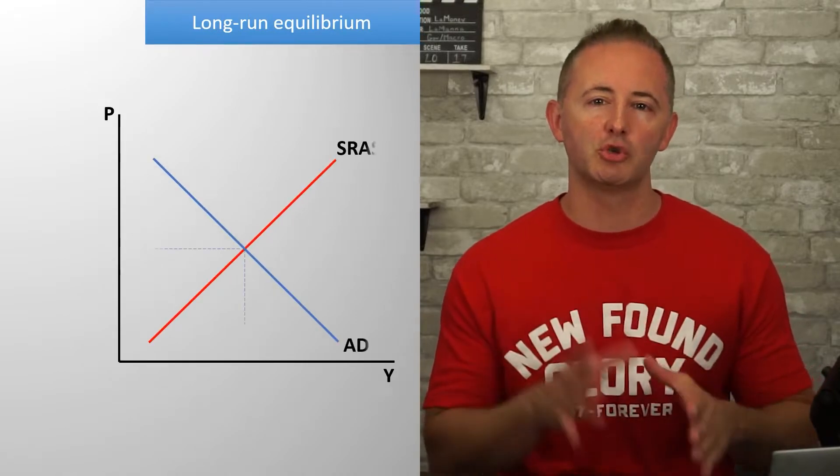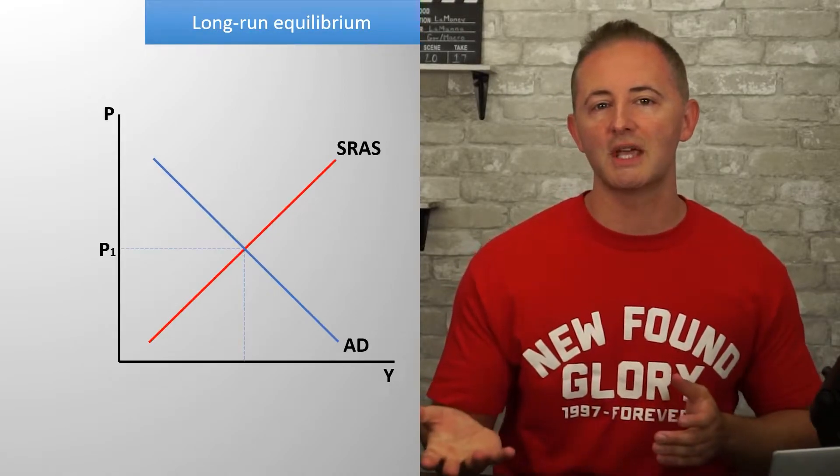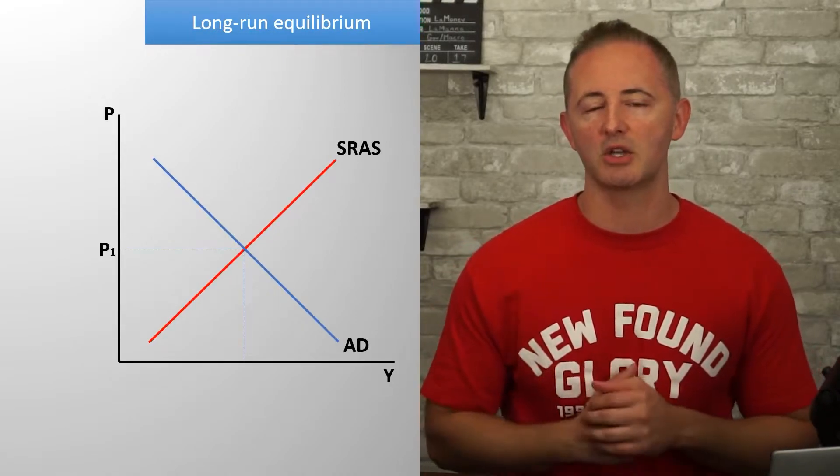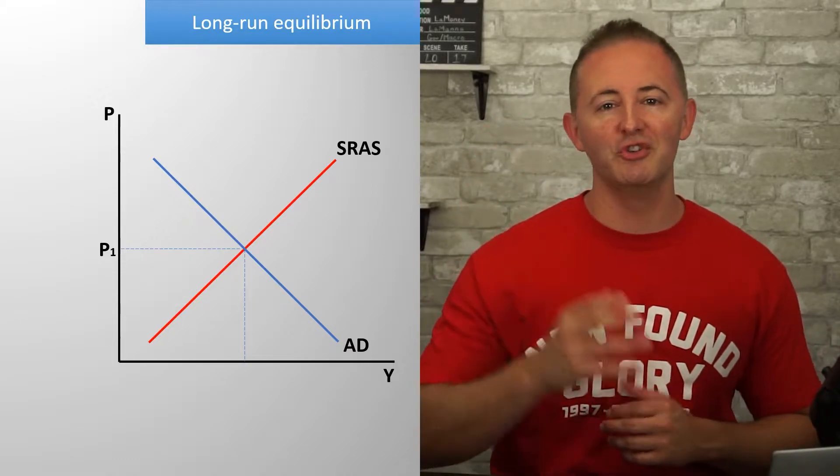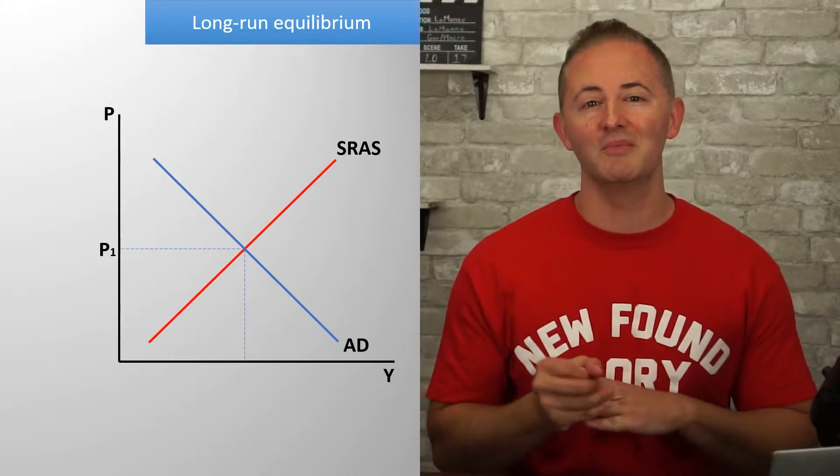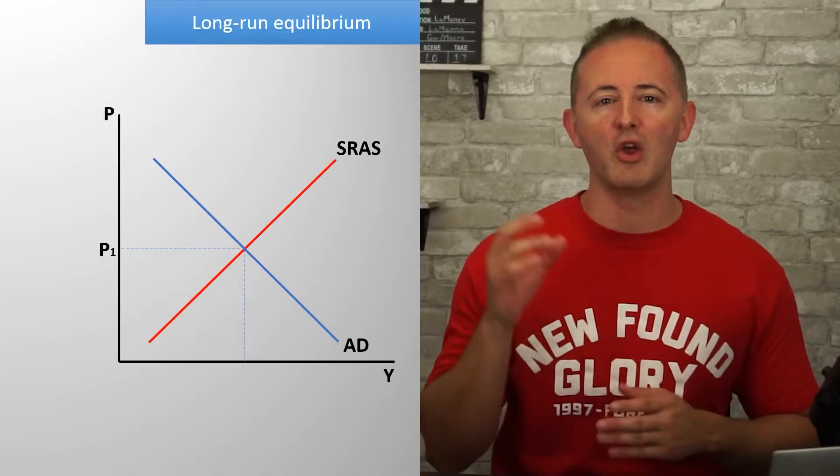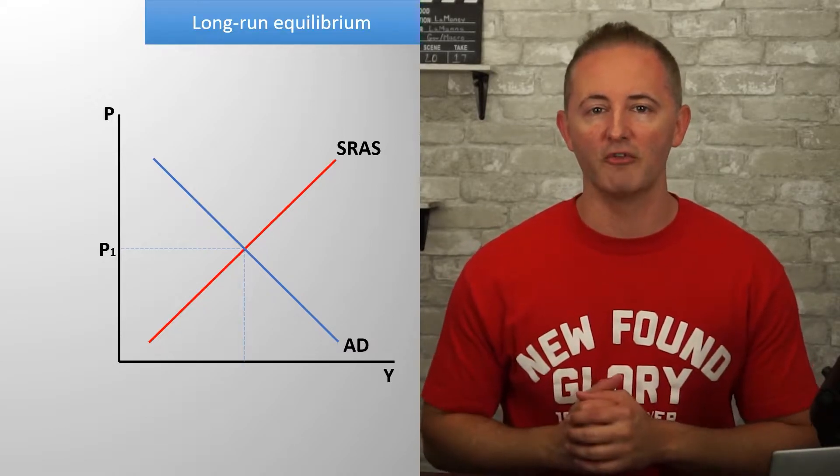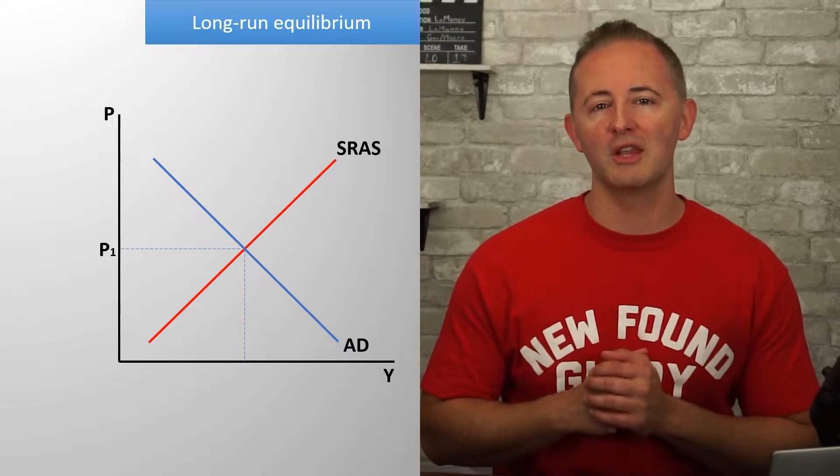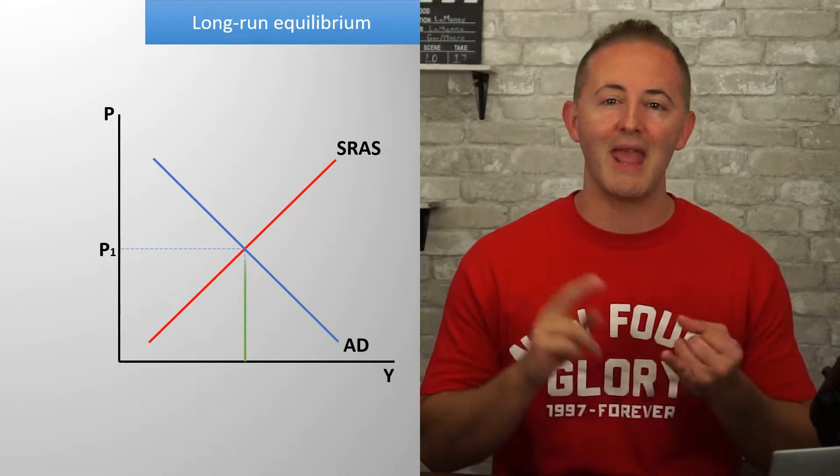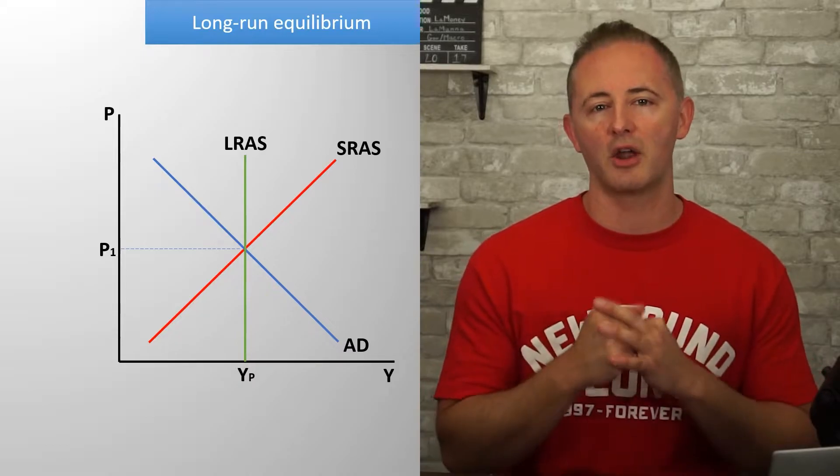Okay, so we established that short-run equilibrium occurs at the intersection of the AD and SRAS curves. But those future Nobel Prize-winning economists among you may be sitting at home like, okay, but what about that third curve? The all-important LRAS curve. You might see this coming, but long-run equilibrium occurs at the intersection of the AD, SRAS, and LRAS curves.